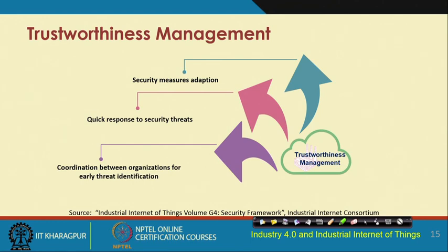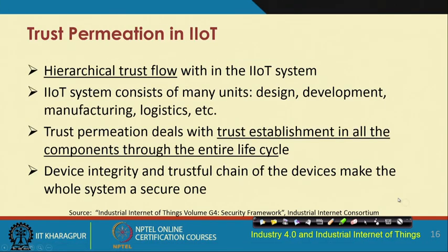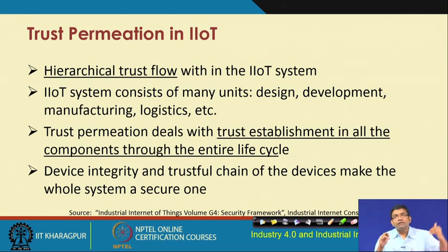Trustworthiness is very important, and to manage it in IIoT, three measures must be taken: first, security measures for adoption; second, quick response to security threats; and third, coordination between organizations for early threat identification. Trust permeation in IIoT is also important — in hierarchical IIoT systems, trust must flow through all different levels of hierarchy.